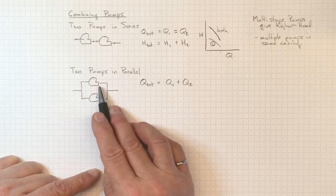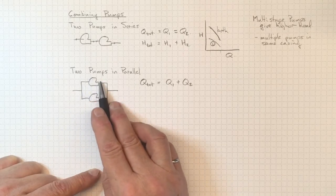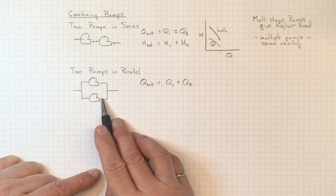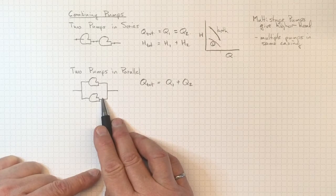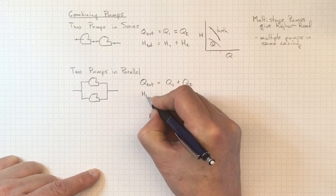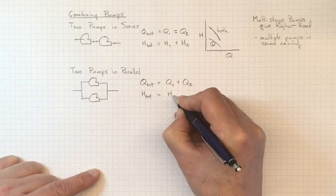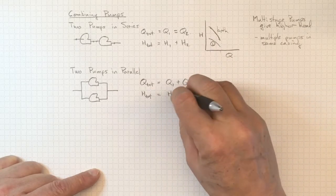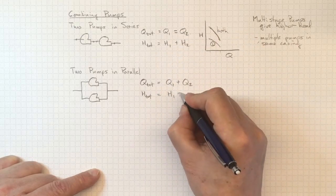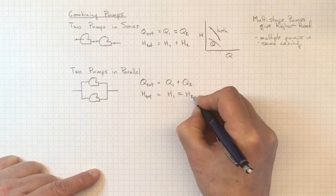We'll wind up with the flows adjusting such that the head rise across here and the head rise across here will wind up being the same. So the total head is just equal to H1, not plus this time. It's the same H1 and H2.